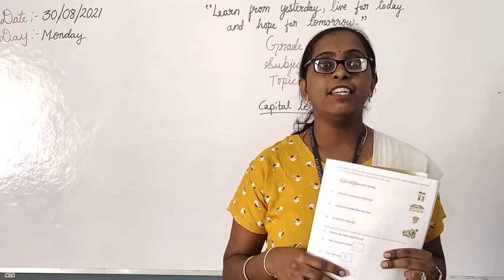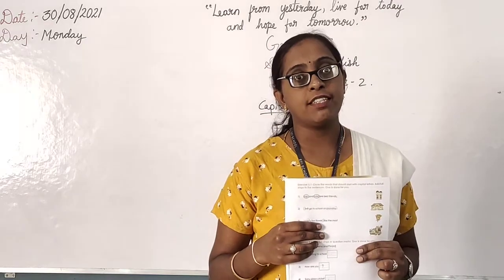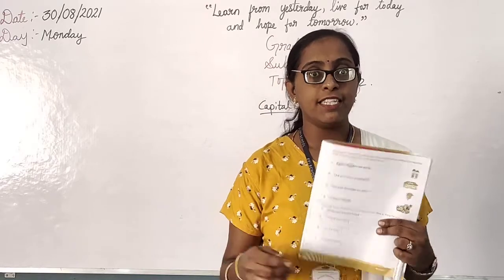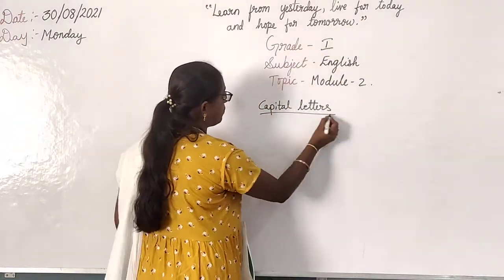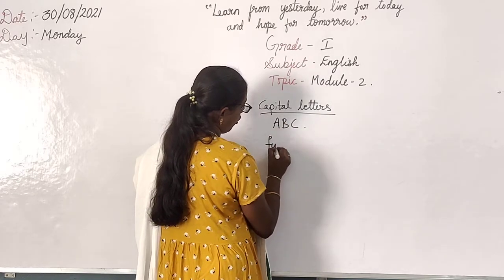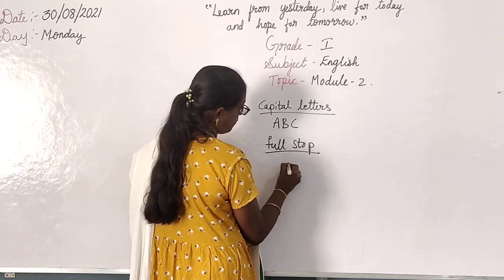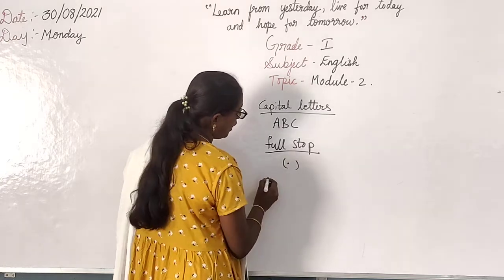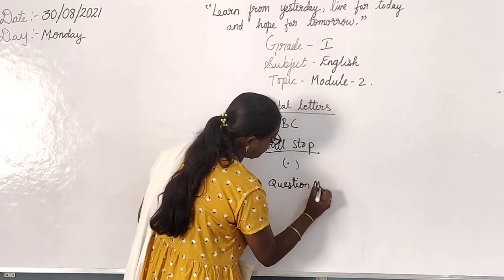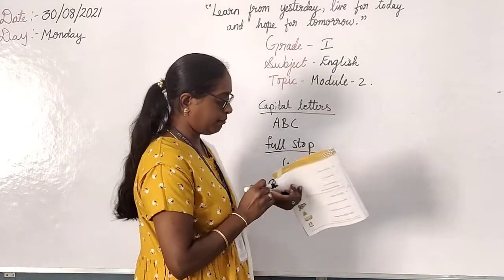Then next we have question mark. We learned question mark also. What is a question mark? When we are asking some question, we will end that question with a question mark. Yes. What did we learn? Capital letters — these are the capital letters. Then we learned full stop. What is full stop? This point is full stop. Then what we learned? Question mark. This is the question mark.